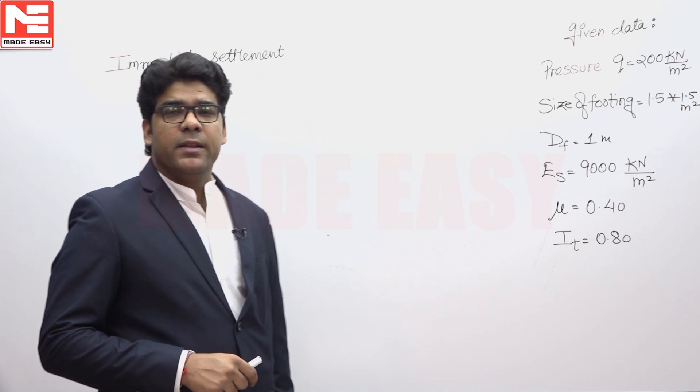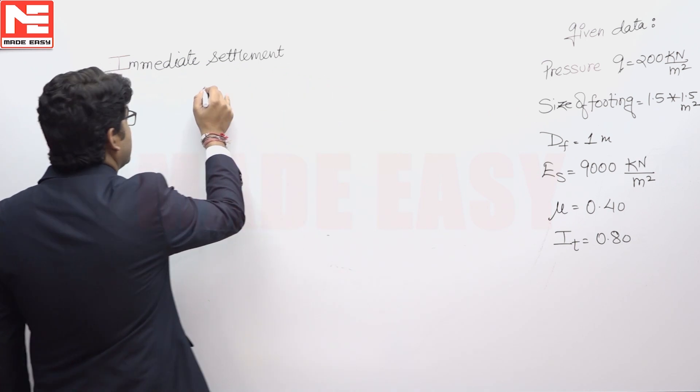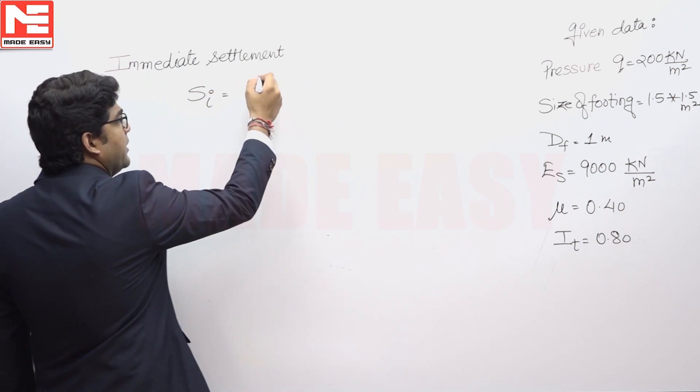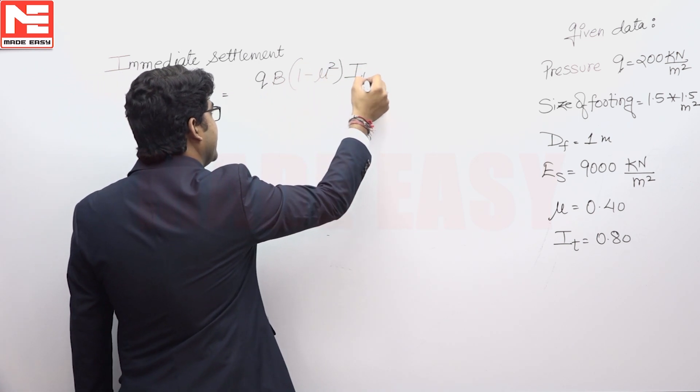So in this case, the question is asking about elastic settlement and elastic settlement or immediate settlement is given by QB 1 minus mu square IT upon ES.